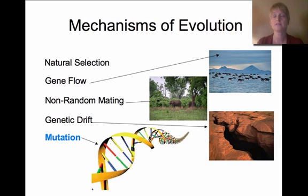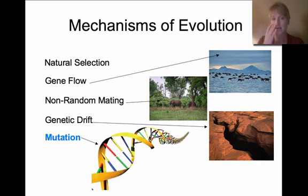Some mechanisms of evolution — things that would cause evolution to happen — include natural selection, which we've just talked about. It's a very common mechanism of evolution, but it's not the only one.